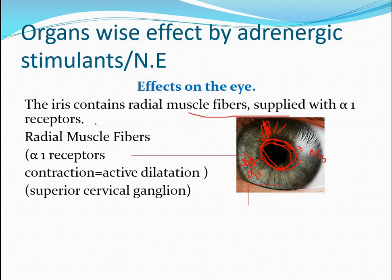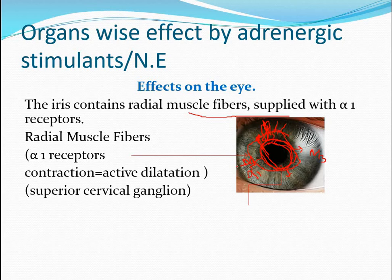The iris contains radial muscle fibers which are supplied with alpha-1 receptors. Once these radial muscle fibers contract, the pupil retracts from every side, and this retraction leads to dilation of the pupil. This dilation is called active dilation, because norepinephrine attaches with alpha-1 receptors and releases calcium from internal stores.